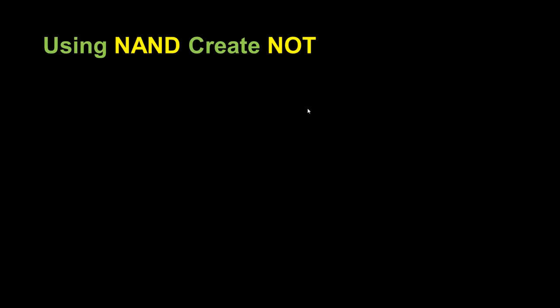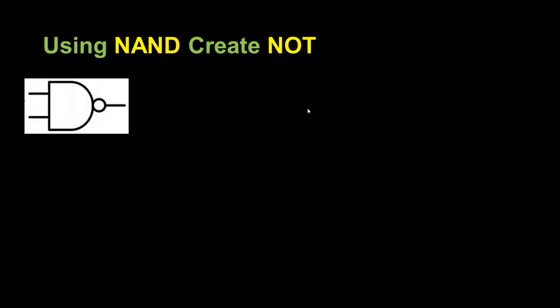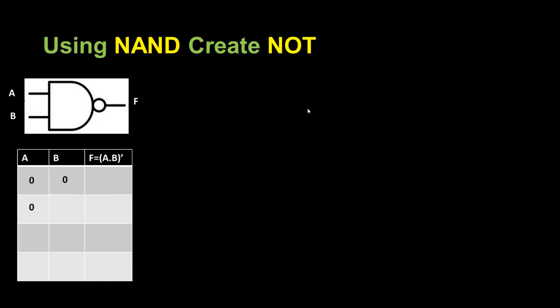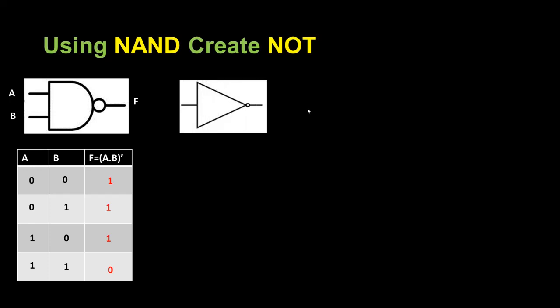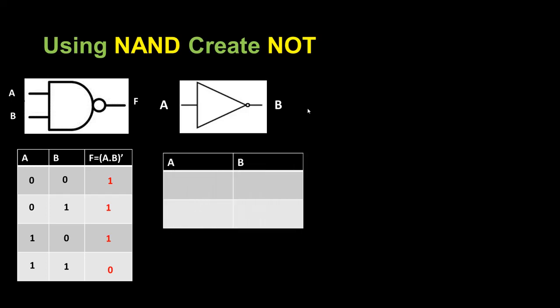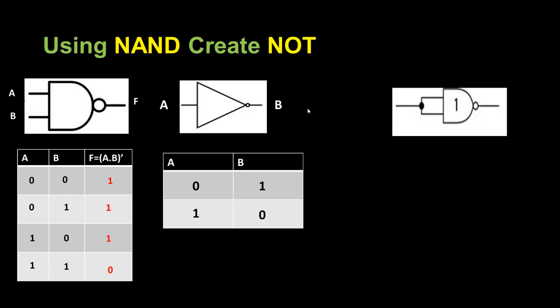Now we start with NAND. I want to create a NOT gate using a NAND gate. This is my NAND gate — I have two inputs and F as my output. Based on A and B I am writing possible input combinations, and this is my output for the NAND gate. In a NOT gate you have only one input and the opposite value as output. If I input 0 I get 1, and if I input 1 I get 0.